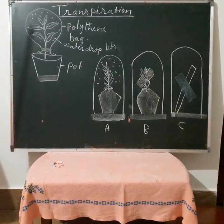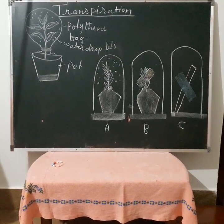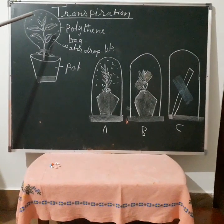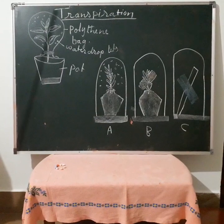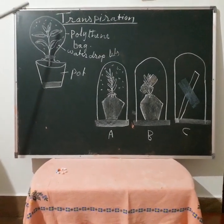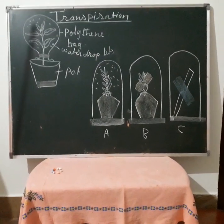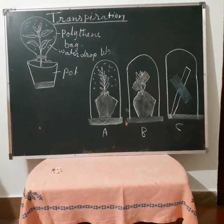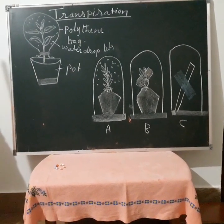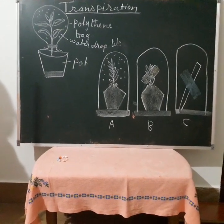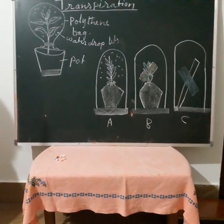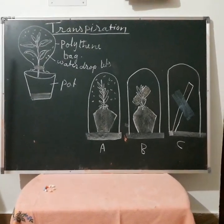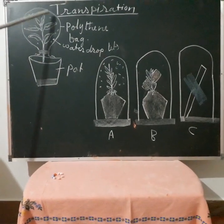Plants only take 2% of water for photosynthesis and other activities. The rest of the water absorbed is transpired through the leaves to the atmosphere. Transpiration is the process in which water vapor is lost through the aerial parts of the plant. Or you can say transpiration is the loss of water from the aerial part of the plant.